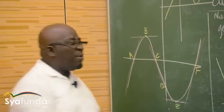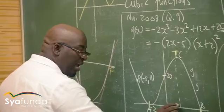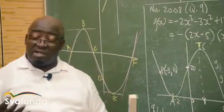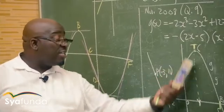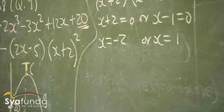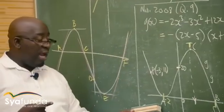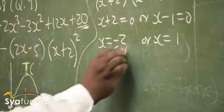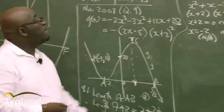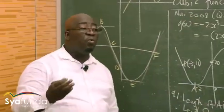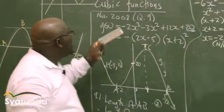Now let's identify which value belongs to point T. When looking for x at point T, I know that point T is in the first quadrant where all x values are positive. So it cannot be negative two. I have two values: one negative and one positive. The negative value minus two corresponds to the other turning point, not T. Therefore the x-coordinate of T equals one. If we needed the y-coordinate, we would substitute x equals one into the original equation.